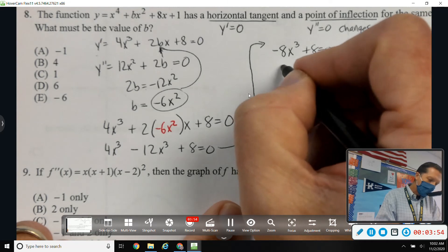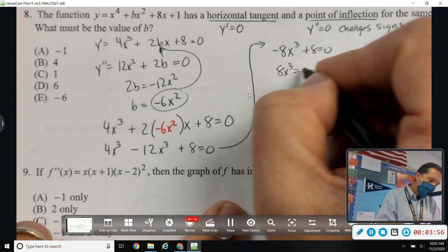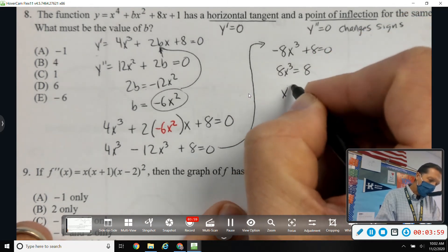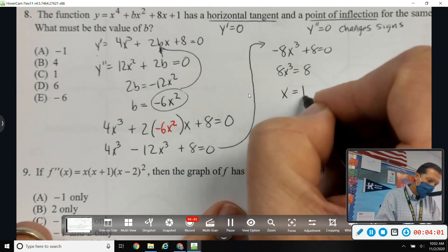Negative 8x cubed plus 8 equals 0. Let's move things around a little bit. But 8x cubed equals 8. So, x cubed equals 1. So, x equals 1.